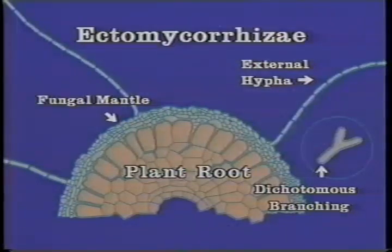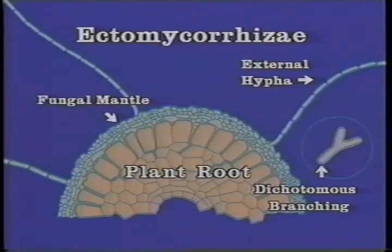Commonly colonized plants include oaks, beeches, birches, and coniferous trees. Root tips are often dichotomously branched, and a fungal mantle is formed surrounding the roots.